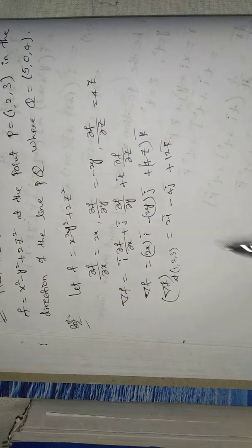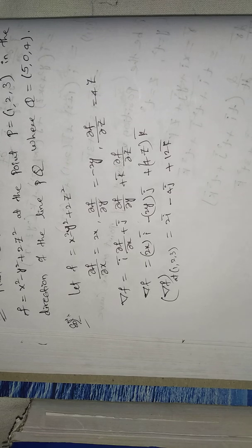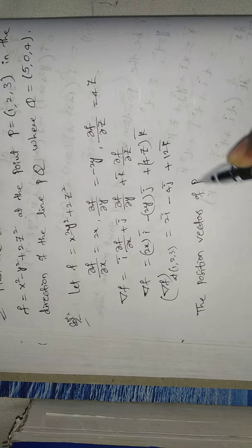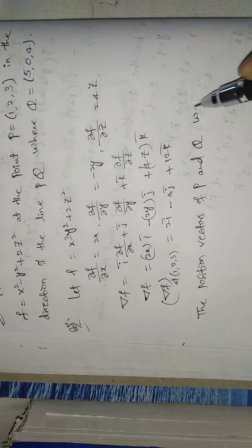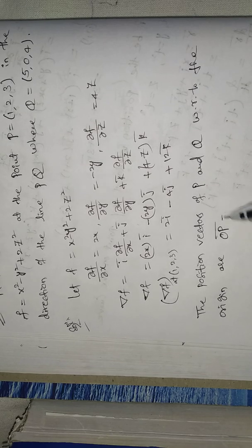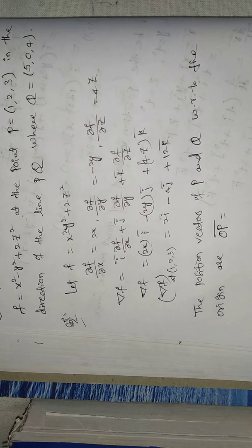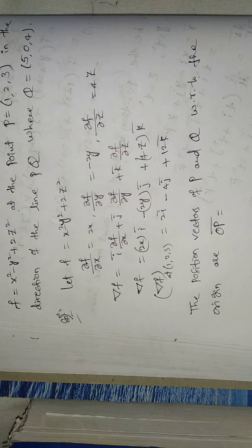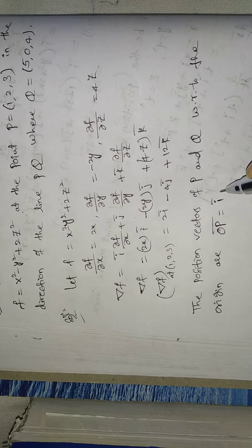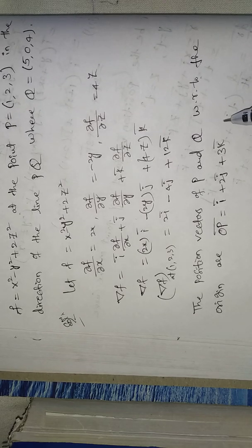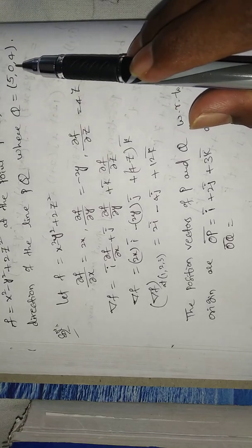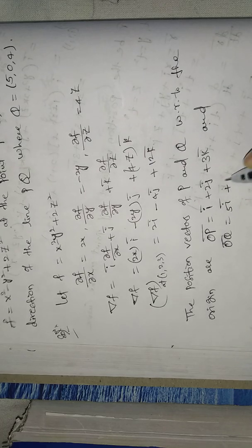Now, the direction of the line: the position vectors of P and Q with respect to the origin are: OP-bar equals 1·i-bar plus 2j-bar plus 3k-bar, and OQ-bar equals 5i-bar plus 0j-bar plus 4k-bar.